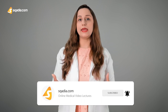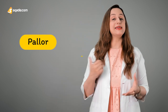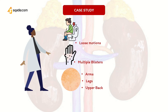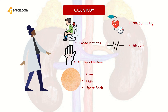She was ill-looking but negative for pallor and icterus. As for the vitals, blood pressure was noted to be 90 by 60 mmHg, pulse 66 beats per minute, temperature 97.99 degrees Fahrenheit, and respiratory rate 22 per minute.